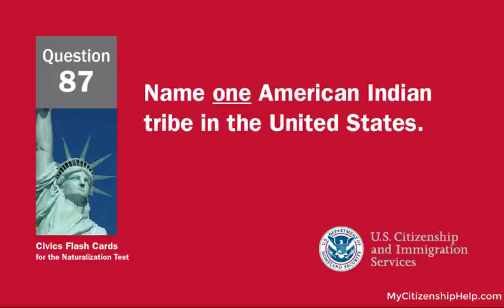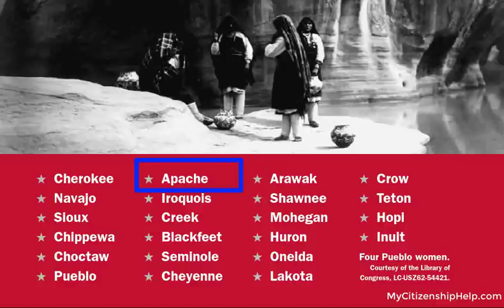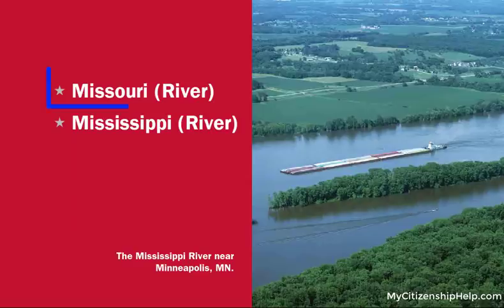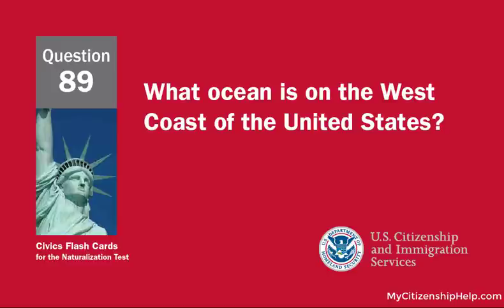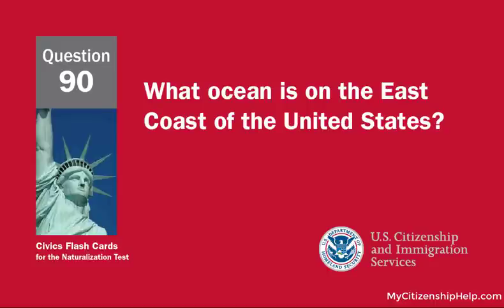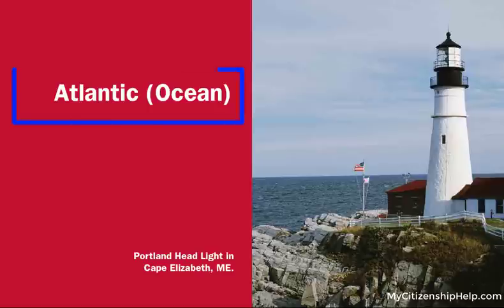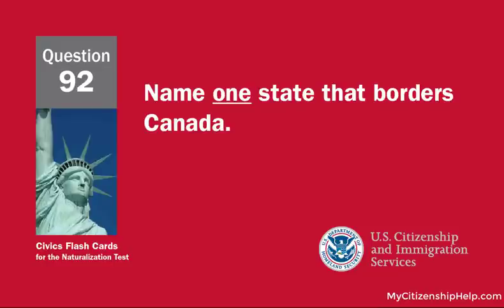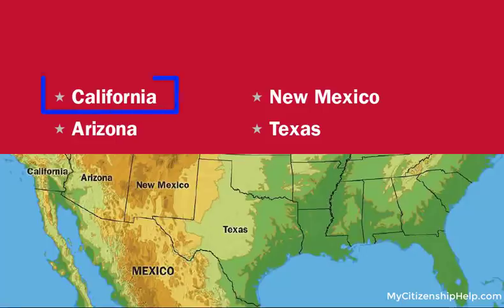Name one American Indian tribe in the United States. Answers will vary. Name one of the two longest rivers in the United States. Missouri River. What ocean is on the west coast of the United States? Pacific Ocean. What ocean is on the east coast of the United States? Atlantic Ocean. Name one U.S. territory. Puerto Rico. Name one state that borders Canada. Maine. Name one state that borders Mexico. California.